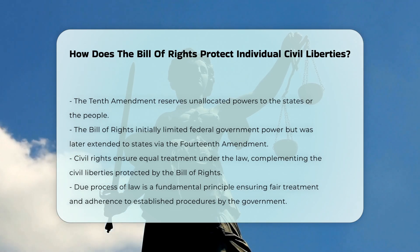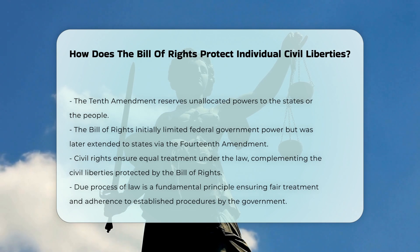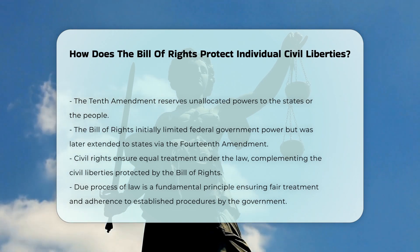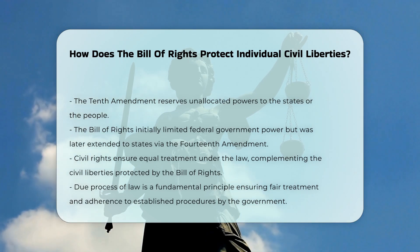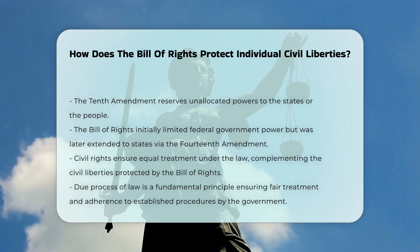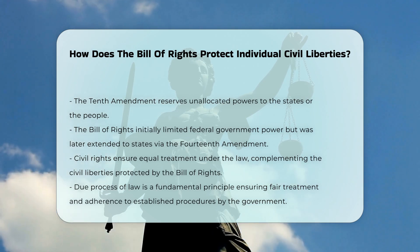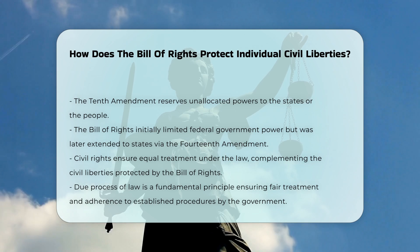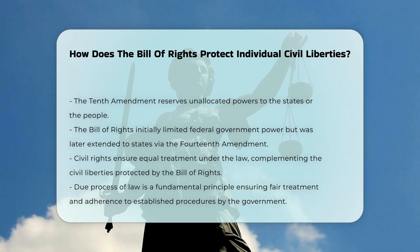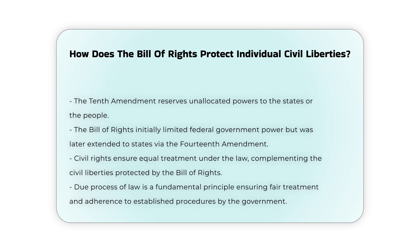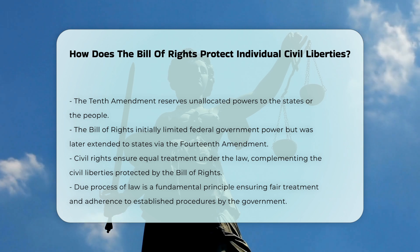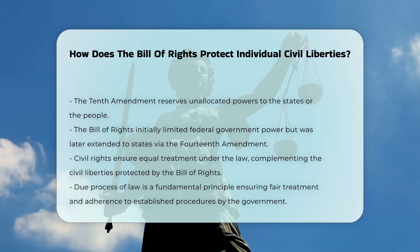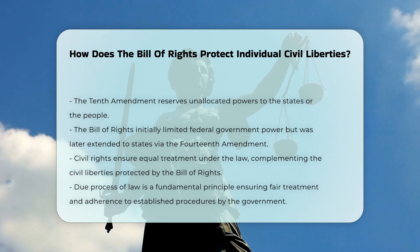Civil Rights and Liberties: While civil liberties protect individuals against government actions, civil rights ensure equal treatment under the law and freedom from discrimination. The Bill of Rights and subsequent amendments have expanded to protect both civil liberties and civil rights, particularly through the Thirteenth, Fourteenth, and Fifteenth Amendments.